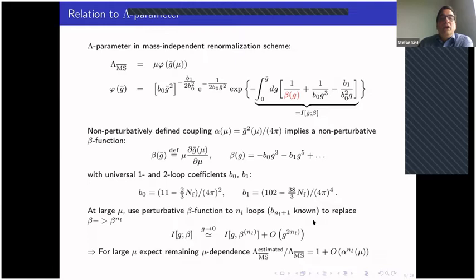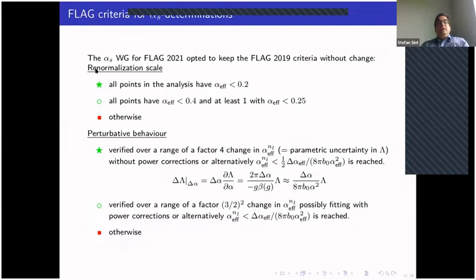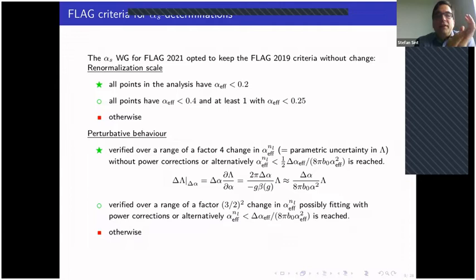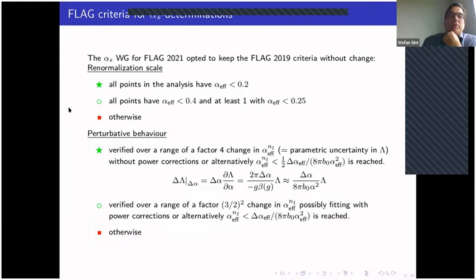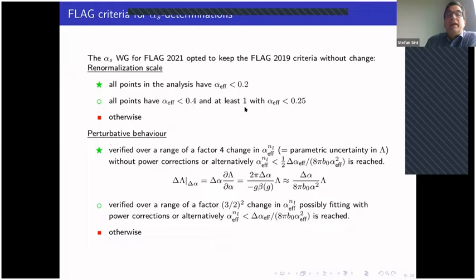For FLAG 2021, the working group opted to keep the criteria unchanged from the previous FLAG report. For the renormalization scale criterion, all points entering the analysis must have an effective alpha less than 0.2 for a green star. An open green circle is given if all points have alpha_effective less than 0.4 and at least one reaches below 0.25. Otherwise a red square is assigned, meaning the criteria are failed.